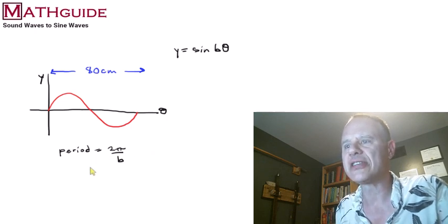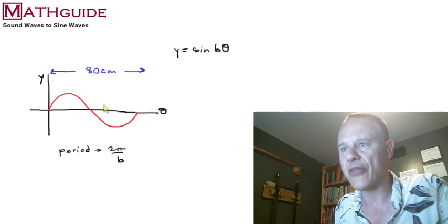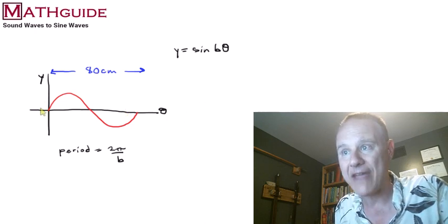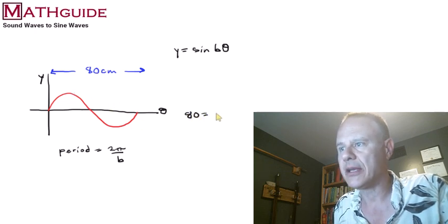Well, first of all, if I use this equation for our function, I know that the period or the length, the wavelength, that's the period, the length of one cycle is 80. So I'm going to put down 80. And I've got to put 2 pi over b.